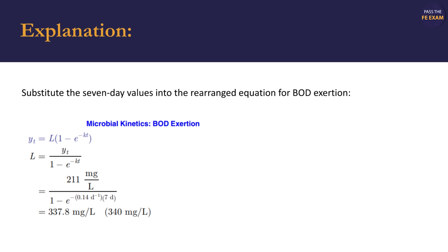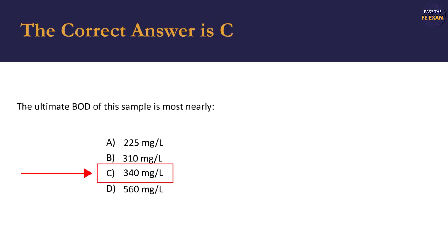When we refer back to our answer choice options on the first slide, we see that this is very close to answer C, 340 mg per liter. Accordingly, C is the correct answer and we choose it.